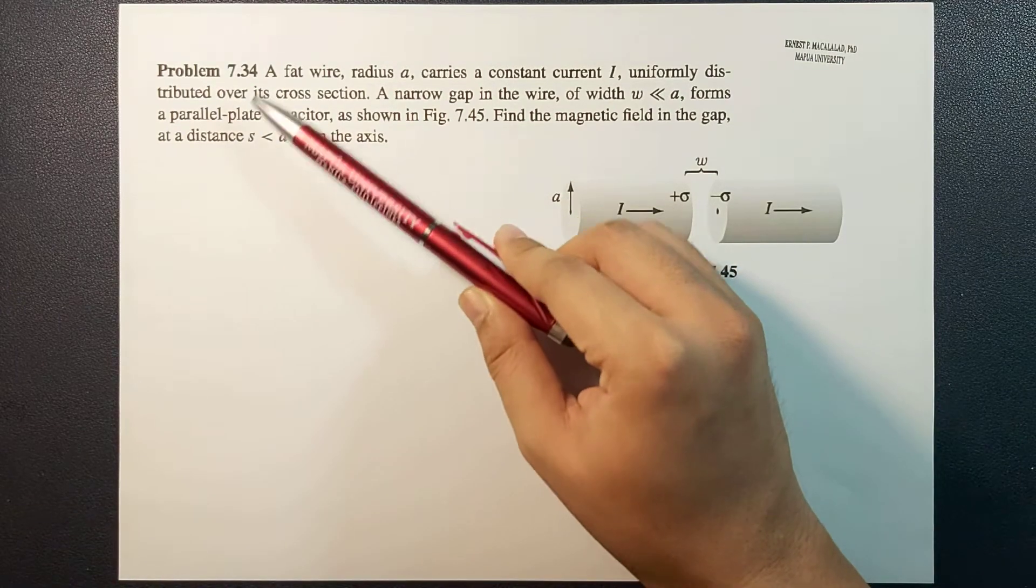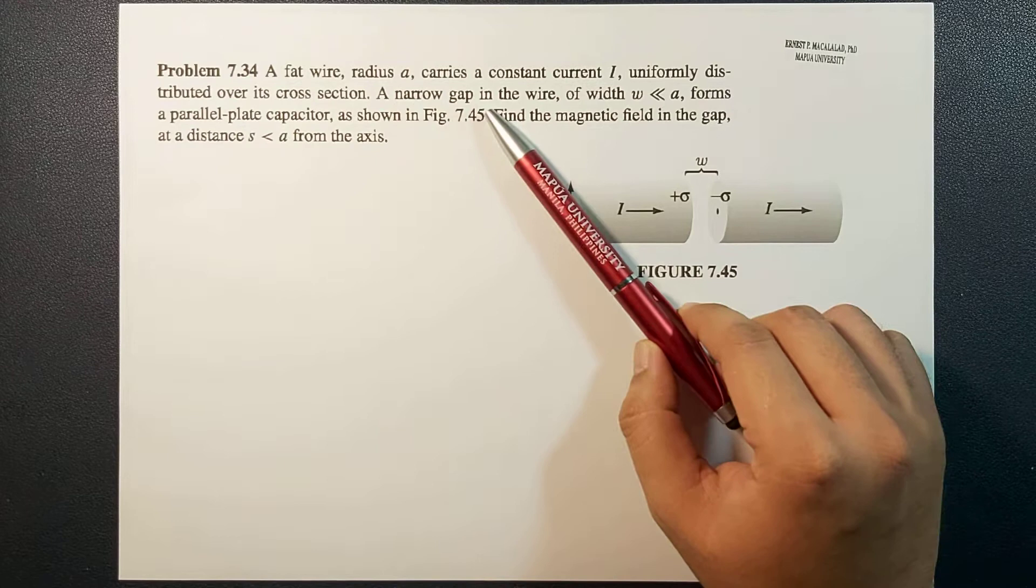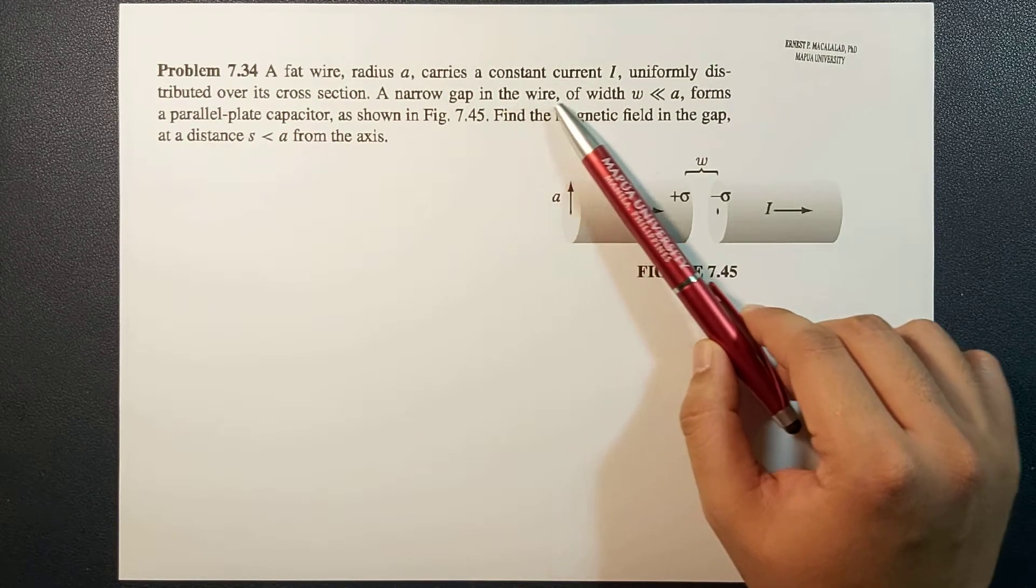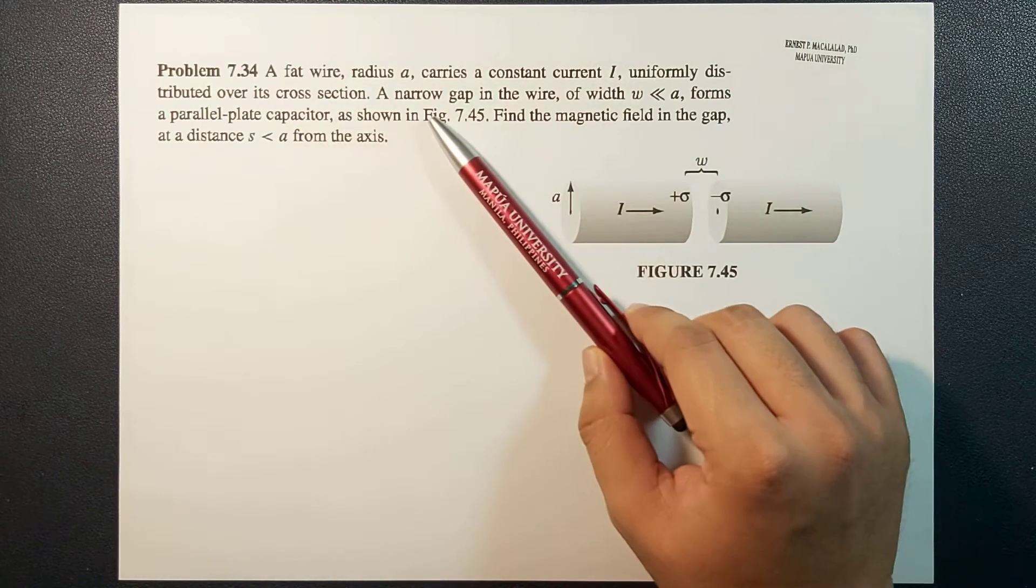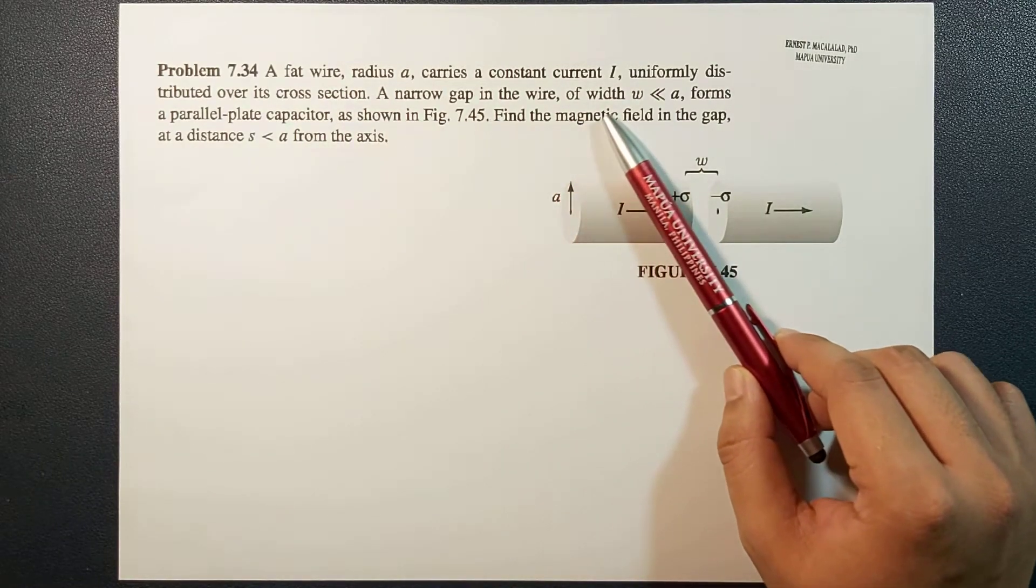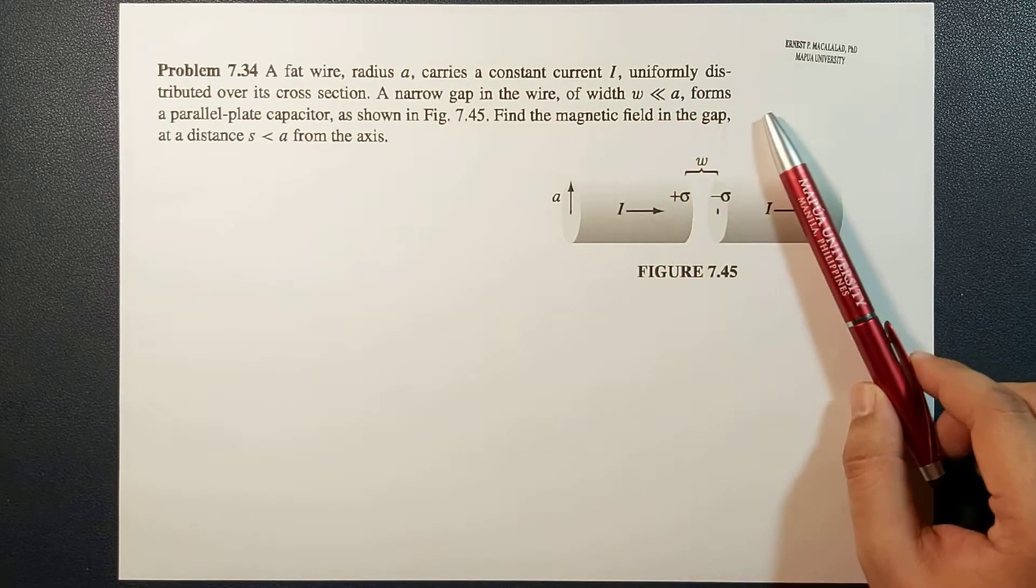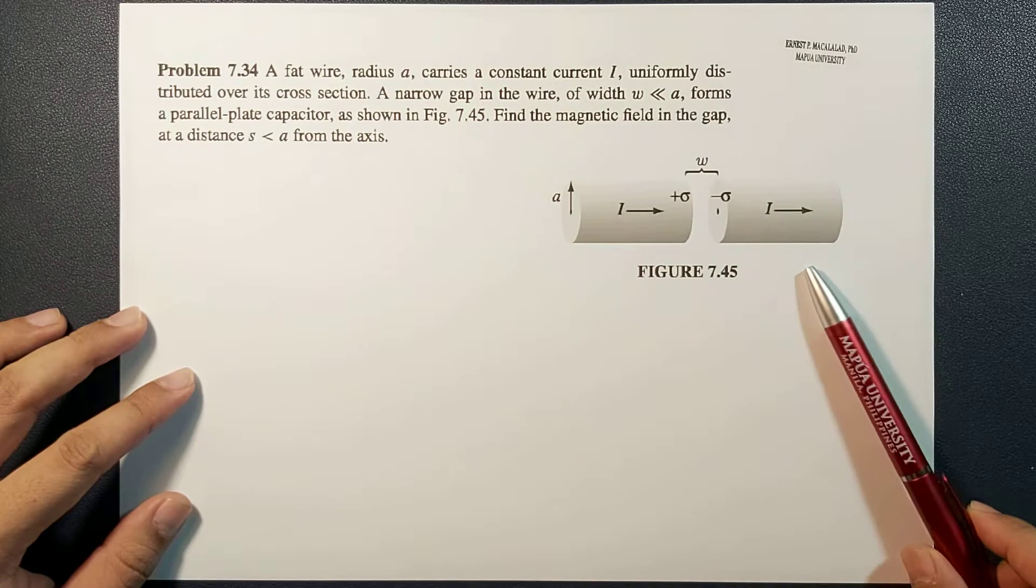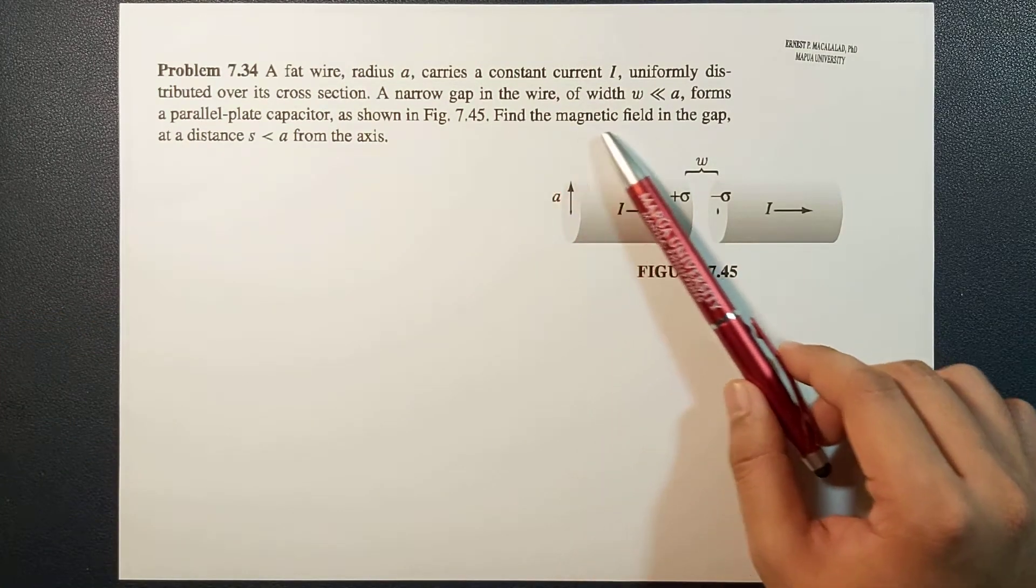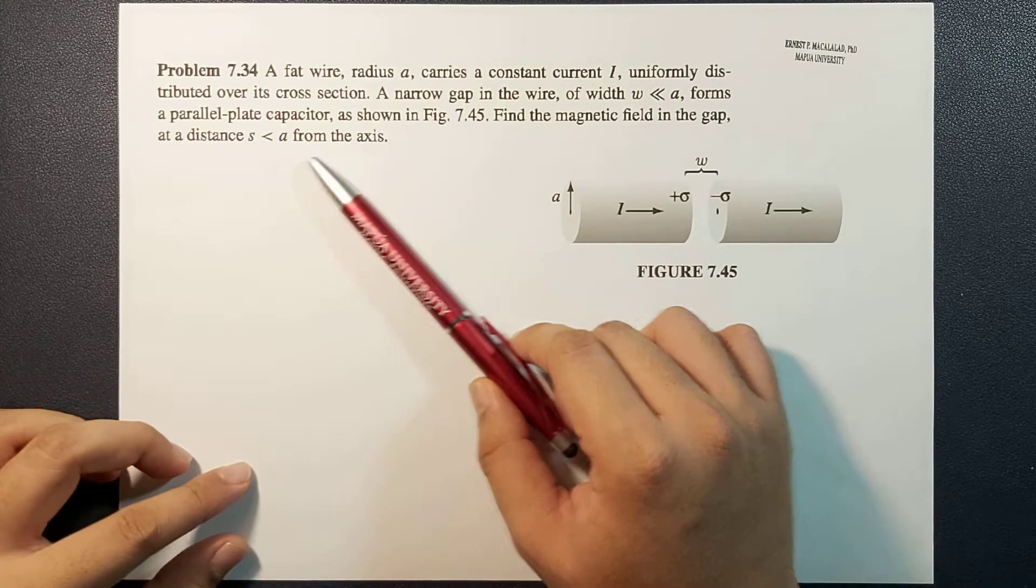The problem reads: A fat wire radius A carries a constant current I, uniformly distributed over its cross-section. A narrow gap in the wire of width W, which is much less than A, forms a parallel plate capacitor as shown in the figure. Find the magnetic field in the gap at a distance S greater than A from the axis.